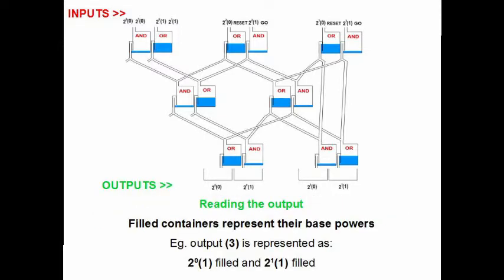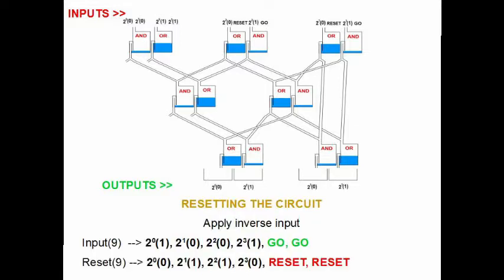After all inputs are entered and the water stops flowing, one container of each container pair at the bottom row will be filled. Follow the labels to determine the result. An output of 3 is 11 in binary and is represented by the second and fourth containers being filled. To reset the circuit for recalculation, apply the inverse inputs. Apply water to the reset inputs as well. The circuit should return to its original state.